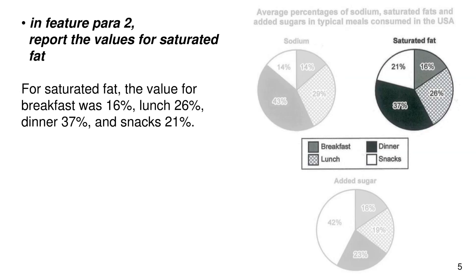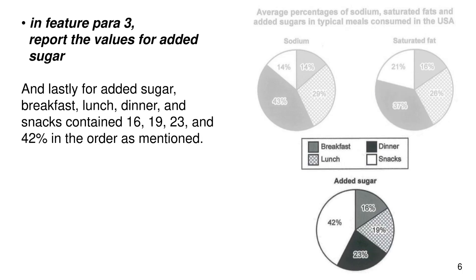In feature paragraph two, report the values for saturated fat. For saturated fat, the value for breakfast was 16 percent, lunch 26 percent, dinner 37 percent, and snacks 21 percent. In feature paragraph three, for added sugar, breakfast, lunch, dinner, and snacks contained 16, 19, 23, and 42 percent in the order as mentioned.